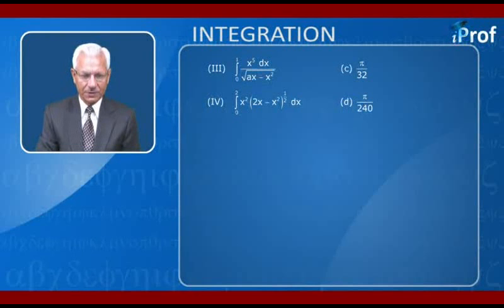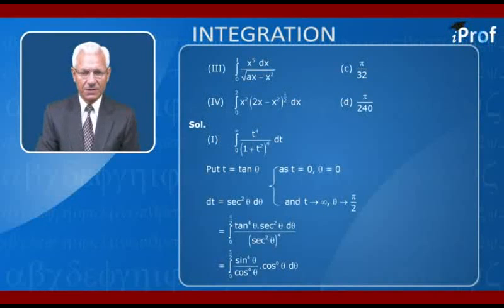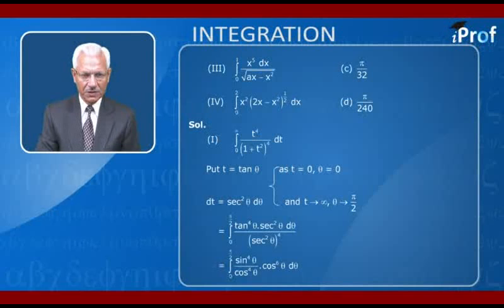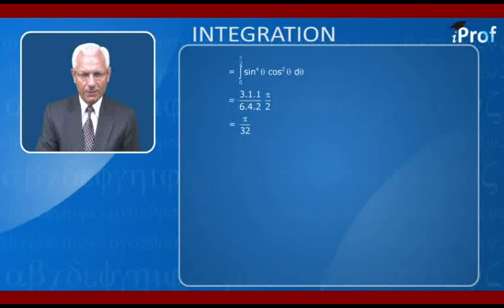Consider the first question: ∫₀^∞ t⁴/(1+t²)⁴ dt. We put t = tan θ, so dt = sec²θ dθ. When t = 0, θ = 0; and as t → ∞, θ → π/2. The integral transforms into ∫₀^(π/2) tan⁴θ · sec²θ dθ / sec⁸θ, which simplifies to ∫₀^(π/2) sin⁴θ · cos²θ dθ.